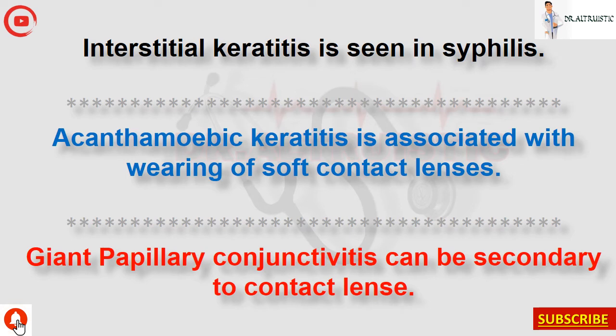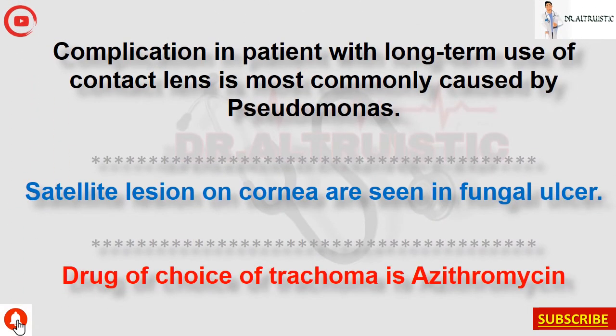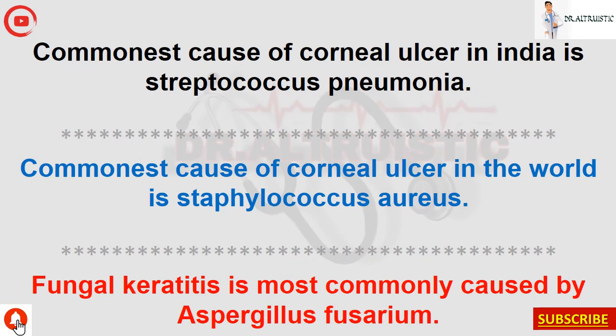Acanthamoeba keratitis is associated with wearing of soft contact lenses. Giant papillary conjunctivitis can be secondary to contact lens use. Complication in patients with long-term use of contact lenses is most commonly caused by Pseudomonas. Satellite lesion on the cornea is seen in fungal ulcer. Drug of choice for trachoma is azithromycin. Commonest cause of corneal ulcer in India is Streptococcus pneumoniae. Commonest cause of corneal ulcer in the world is Staphylococcus aureus. Fungal keratitis is most commonly caused by Aspergillus and Fusarium.